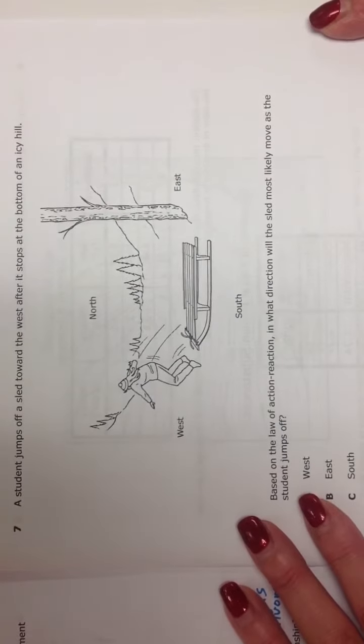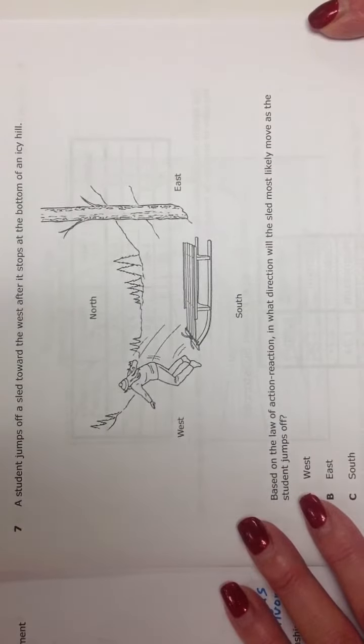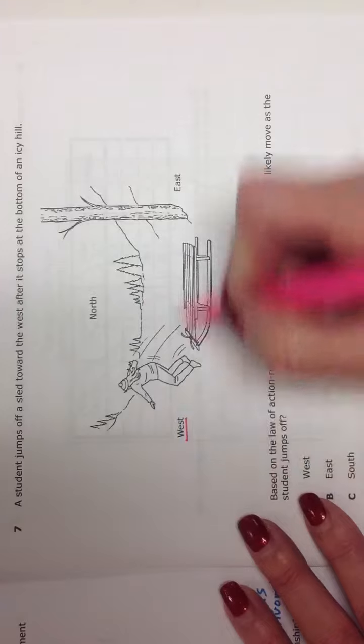Alright, this is question number seven. It says a student jumps off his sled toward the west after it stops at the bottom of an icy hill. So he jumps off the sled toward the west and it gives us west and east.